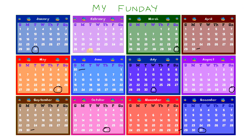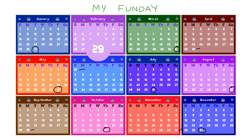Now what about February? February is different. If we look here, February has only 28 days — it's the shortest month in the year. Now sometimes February has 29 days. This happens only once in four years, and when there are 29 days in February, it's called a leap year.